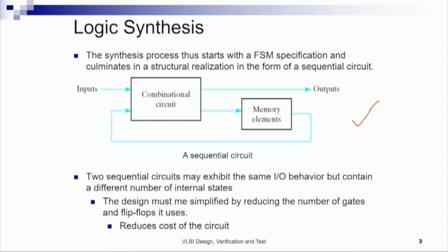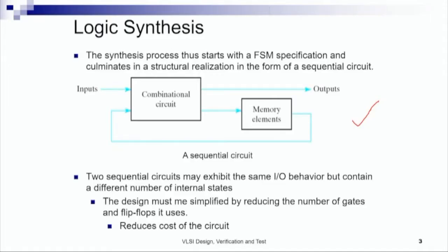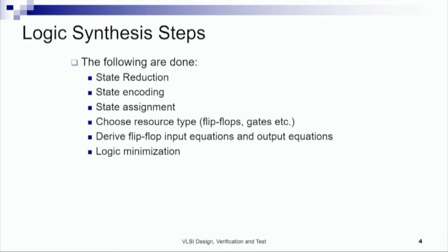Realizing a sequential circuit design in terms of gates and flip flops requires many optimization steps. These optimizations are required because the gate level design has many choices in terms of delay performance and power requirements. Fundamentally, two sequential circuits may exhibit the same I/O behavior but contain a different number of internal states. Therefore, the design must be simplified by reducing the number of gates and flip flops, as reducing the number of states also reduces the cost of the circuit. The basic steps in logic synthesis are: state reduction, state encoding and assignment, choosing the types of flip flops and gates to use, deriving flip flop input equations and output equations, and logic minimization.